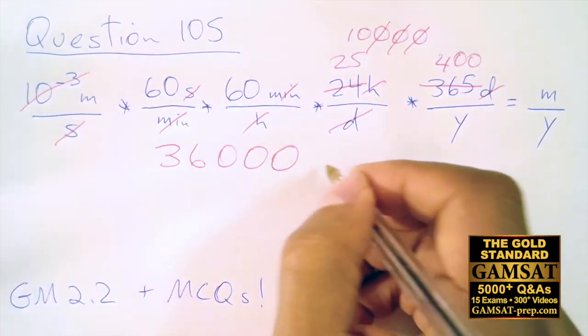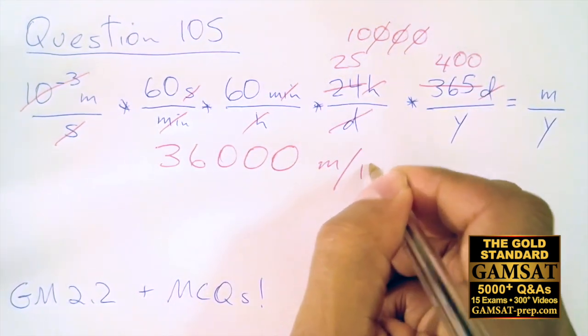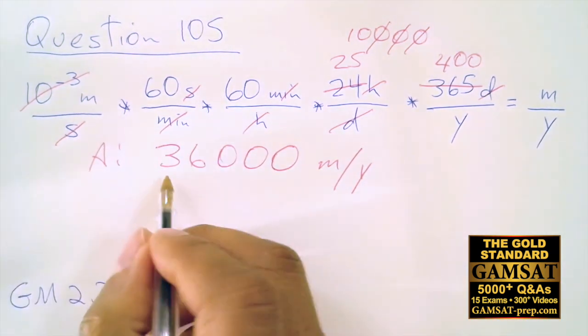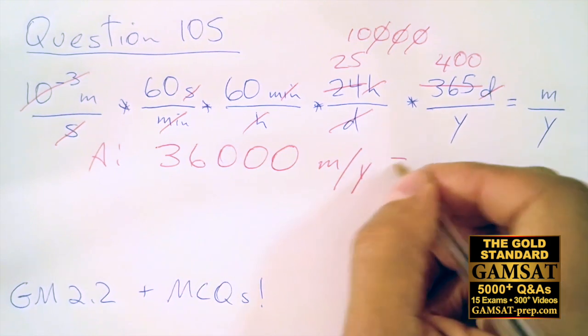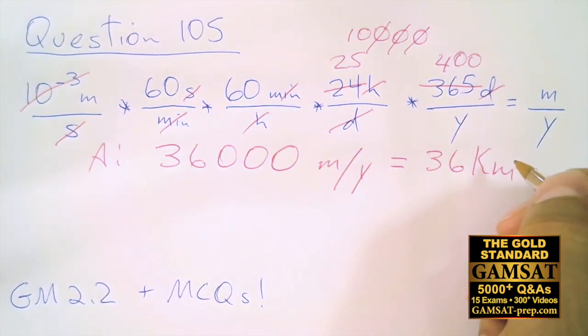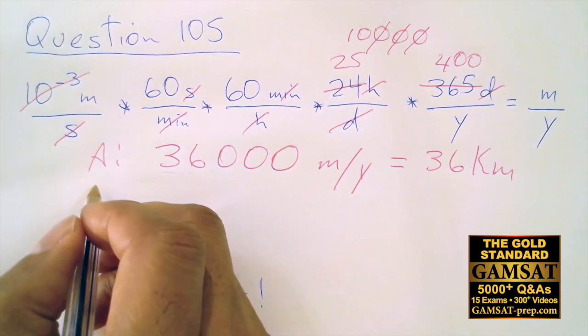Meters per year. So answer choice A is saying 36,000 meters per year, which is 36 kilometers. I think you would agree with me that your nails don't grow 36 kilometers per year.